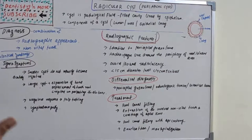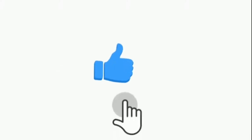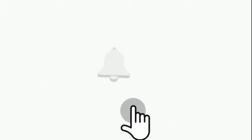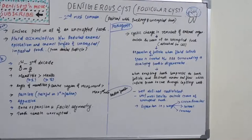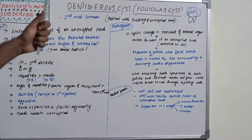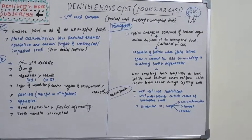Hello everyone, welcome back to a new session on dentistry and more. Today's topic is dentigerous cyst. Last session we covered radicular or periapical cyst. The dentigerous cyst is the second most common cyst after the radicular cyst, so let's see the details.